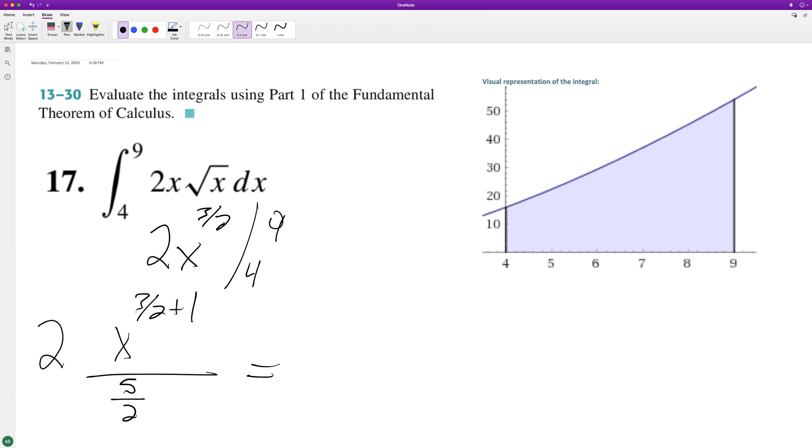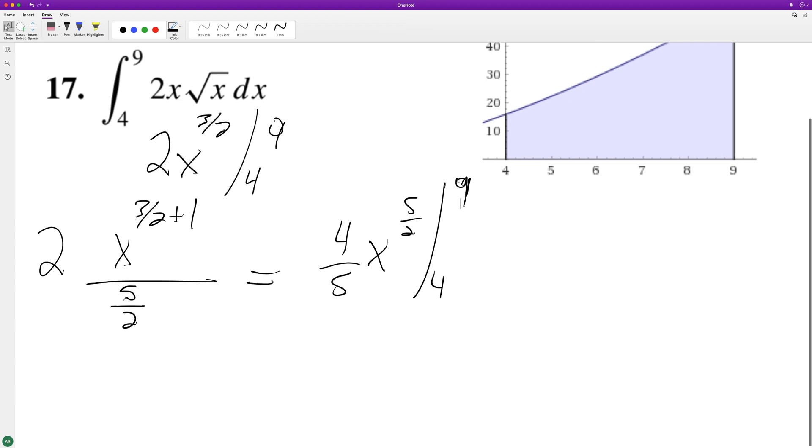So this becomes four over five X raised to the five halves, from four to nine. So this ends up being equal to nine raised to the five halves minus four raised to the five halves.